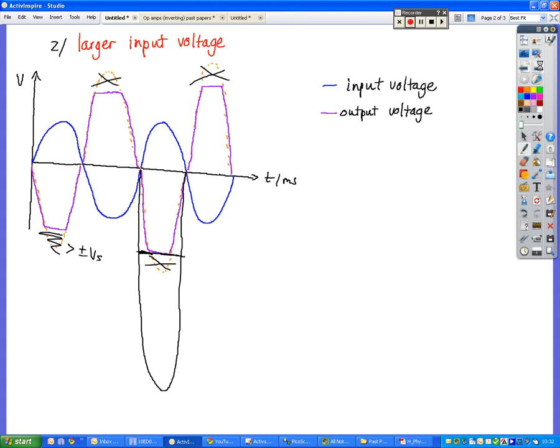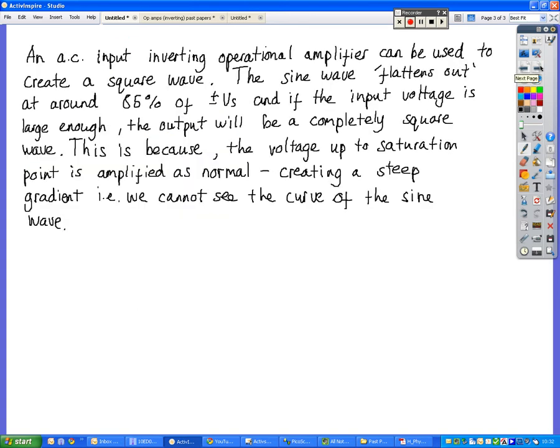So you can use an inverting amplifier with an AC input to create a square wave. The sine wave flattens out at around about 85% of plus or minus Vs. And if the input voltage is high enough, then we'll get a completely square wave.